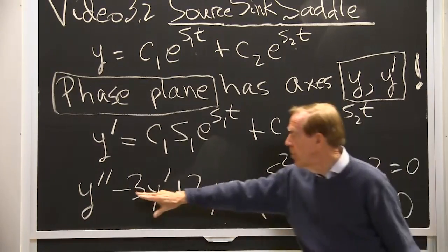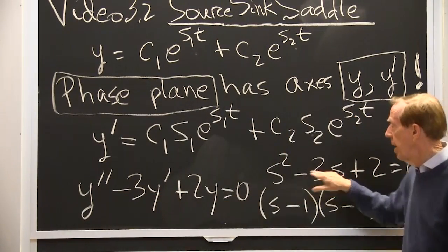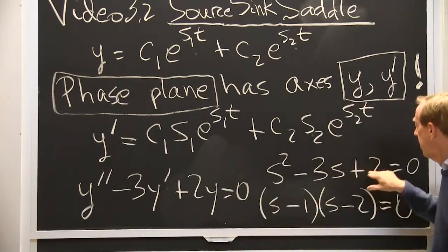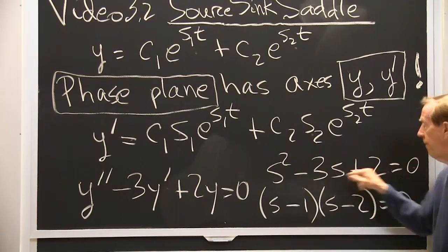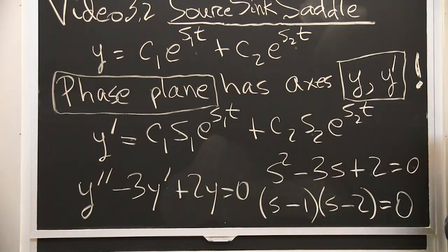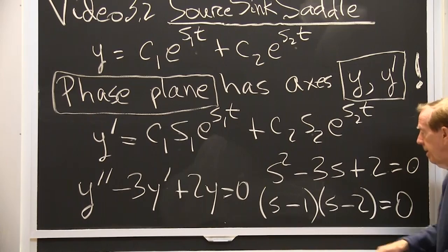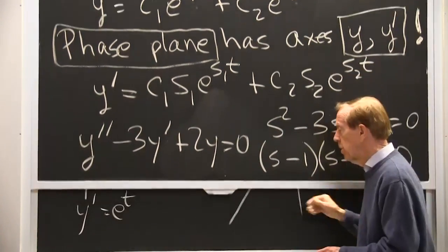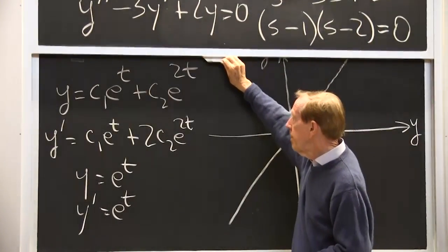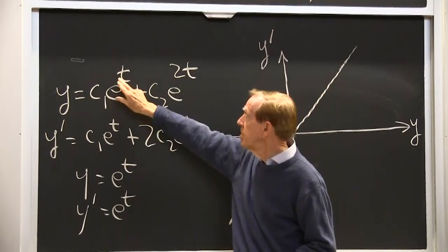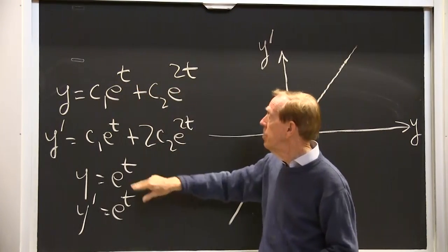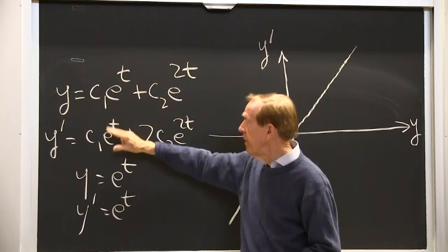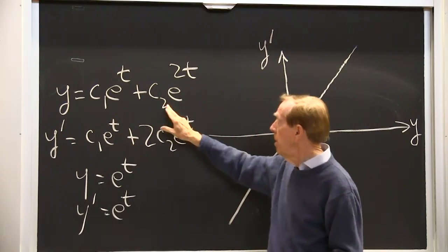I get an s squared from two derivatives minus 3s from one derivative plus two equaling zero. I factor that and I find the two. s1 is one and s2 is two. Now I'm ready for the phase plane picture.